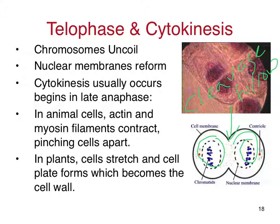It's a little different in a plant cell though. Plant cells can't really stretch that much because they have a cell wall. So in the case of a plant cell, a cell plate will develop between the two forming cells and grow down to create a new barrier between those two daughter cells.